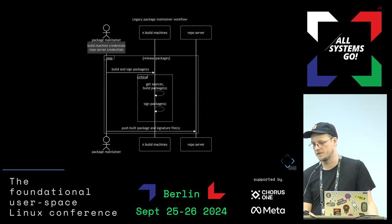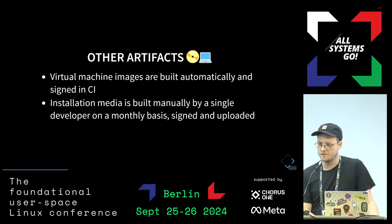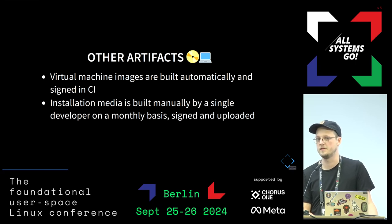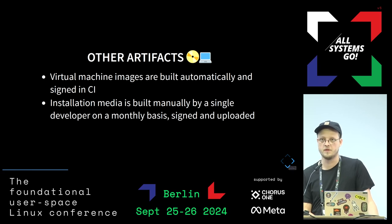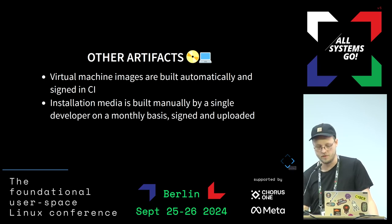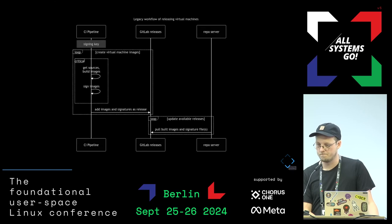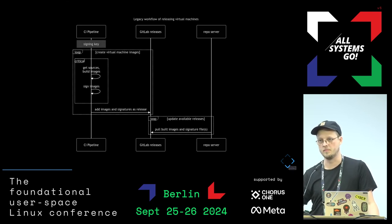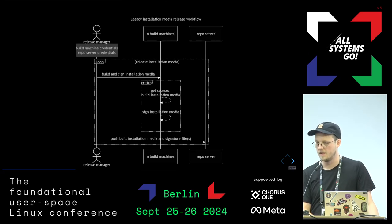The package maintainer workflow gives you access to build machines and the repository server as a packager. We have other artifacts built in slightly different ways: virtual machine images produced weekly, built and automatically signed in CI with a software key; installation media built monthly, done manually and signed manually and uploaded manually with a lot of manual steps. Virtual machines are pulled from releases on GitLab, so CI doesn't need SSH access to the repository server. The release workflow for installation media is all push-based.